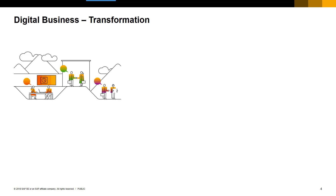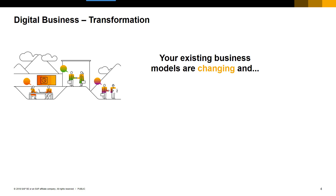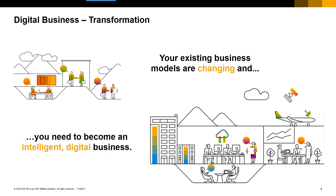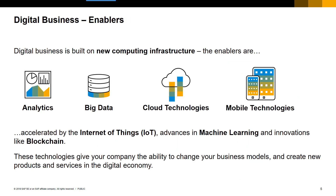The transformation process is about taking your existing business models, recognising that they're changing, and understanding that businesses of all sizes need to become intelligent digital businesses. The speed at which this happens will vary from organisation to organisation, but one of the key things you'll need is what is called a digital core — those primary information systems inside your organisation that help facilitate everything I'm about to talk about.